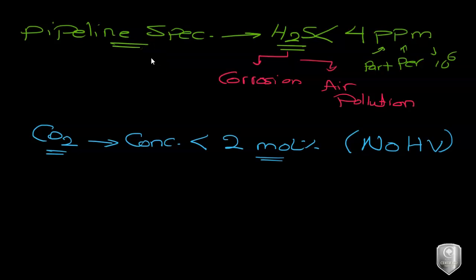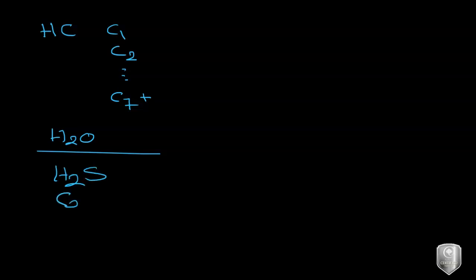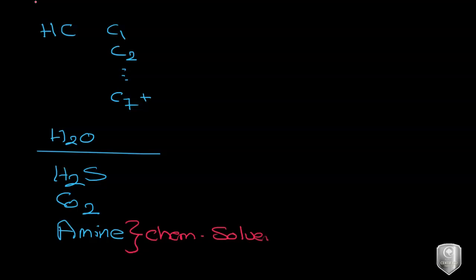Let's go to Aspen HYSYS. Normally, if you are an HYSYS user you would be familiar with adding hydrocarbons such as methane, C7+ as a hypothetical component, and water. In this case, we are also going to add H₂S, carbon dioxide, and an amine, because we are going to have chemical treatment. The amine is our chemical solvent — without it we won't have any chemical reaction.